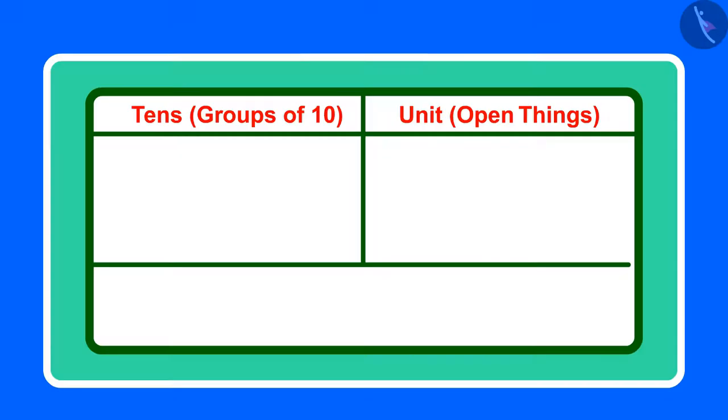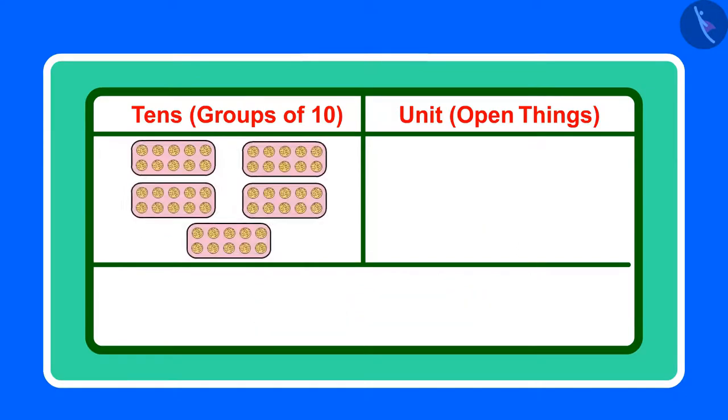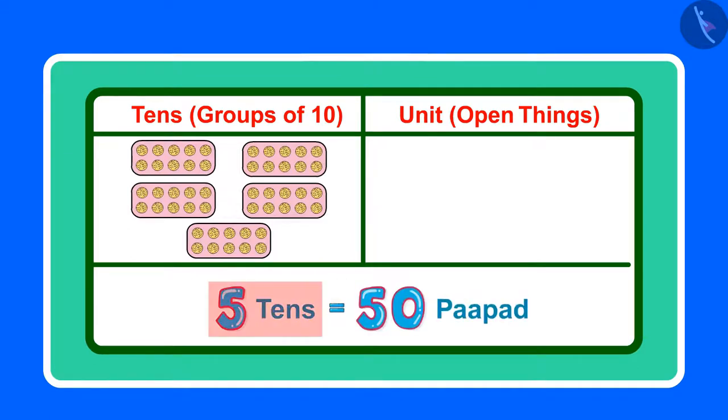Yes Chotu, you said it right. But 15 only has one 10, one group of 10 and 5 ones. But here there are 5 groups of 10 each, which means 5 times 10, 5 tens.